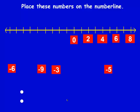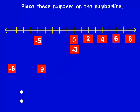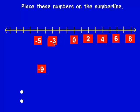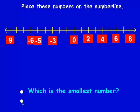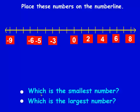Now I'm going to put the negative numbers on. I'll start with negative 5, then negative 3, then negative 6, and then negative 9. Even though the digit 9 is the largest of all of them, because there's a negative sign in front of it, it's the one farthest to the left, so it's the smallest. And which is the largest number? It's the one farthest to the right — it's 8.